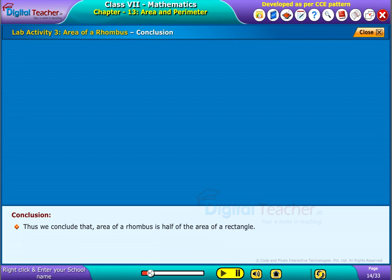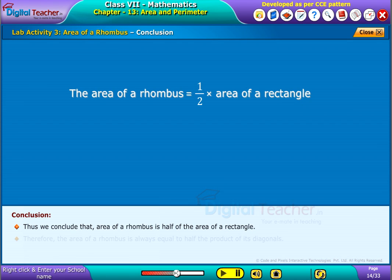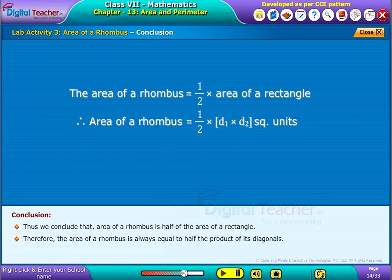Thus we conclude that area of a rhombus is half of the area of a rectangle. Therefore, the area of a rhombus is always equal to half the product of its diagonals.